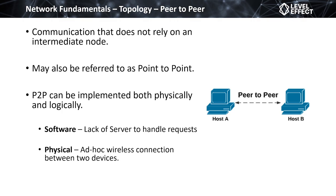Next we have the peer-to-peer network, where two devices can directly communicate with one another. Point-to-point can be implemented both physically and logically. A software or logical implementation would be a connection lacking a central server. Peer-to-peer downloads are a good example — you download from your peers, not from a central authority. There is no command and control; you're just receiving data from other devices sharing in the same network.